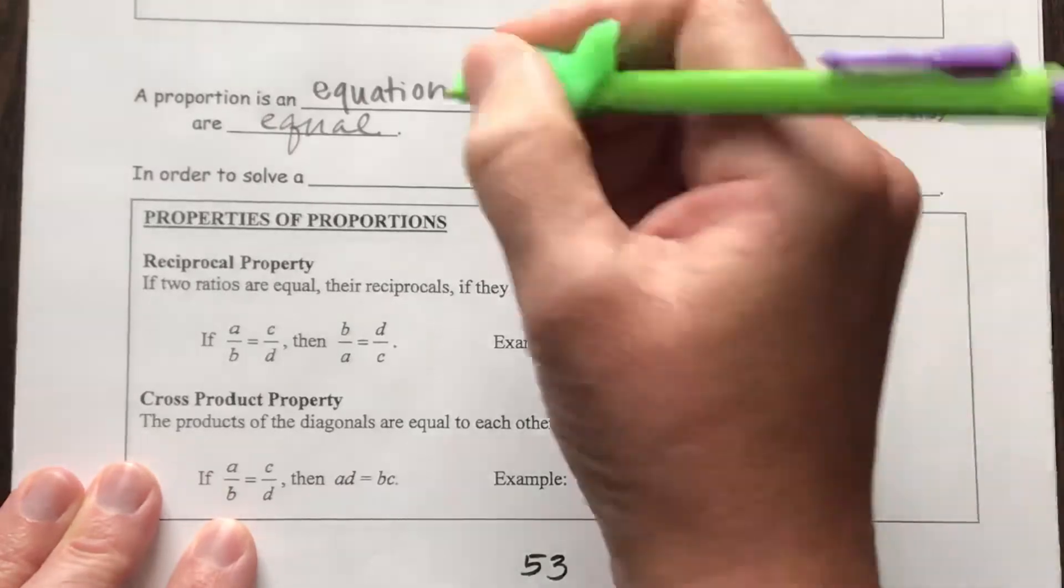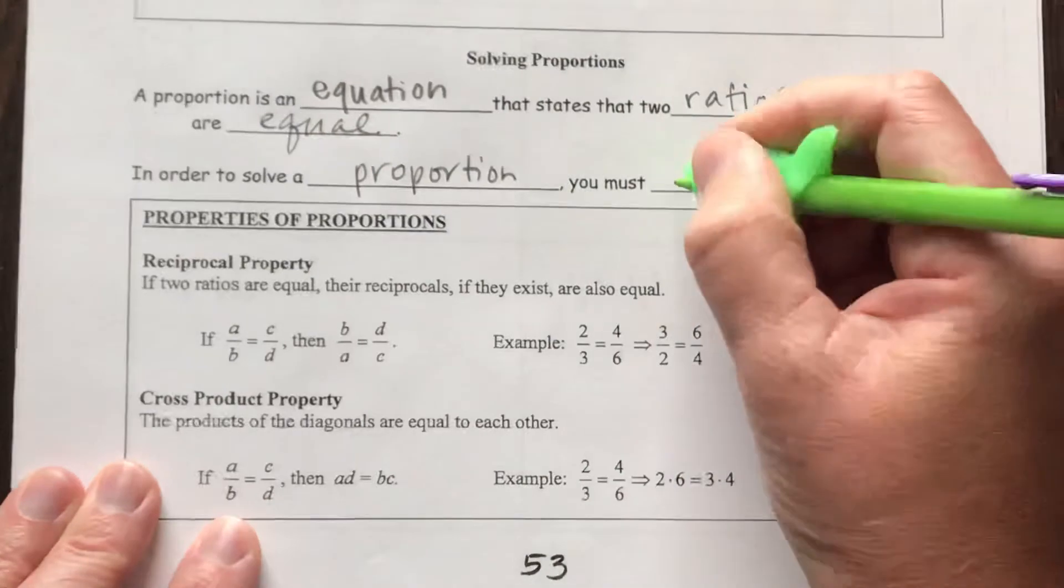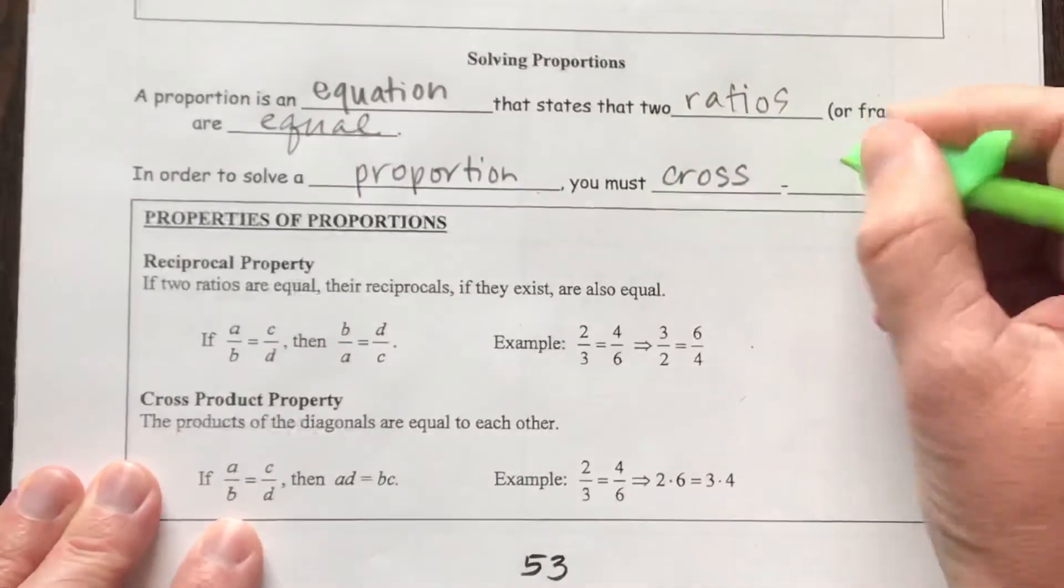Now, in order to solve a proportion, you need to cross multiply.